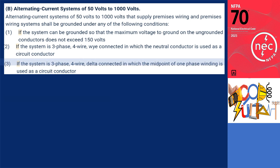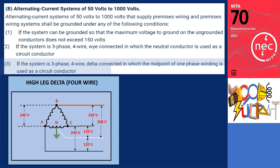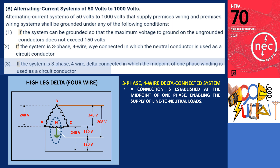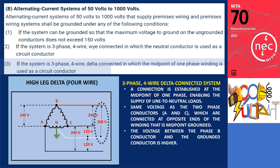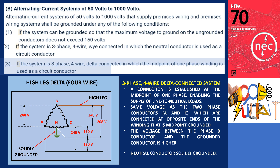For the third condition, if the system is three-phase, four-wire, delta-connected, and the midpoint of one-phase winding is used as a circuit conductor. The illustration depicts a three-phase, four-wire delta-connected system. In this system, a connection is established at the midpoint of one phase, enabling the supply of line-to-neutral loads. The grounded conductor in this configuration develops the same voltage as the two-phase conductors A and C, which are connected at opposite ends of the midpoint-grounded winding. The voltage between the phase B conductor and the grounded conductor is higher in this setup, and the code includes additional requirements addressing the arrangement and identification of the high leg. Same as with three-phase, four-wire Y-connected systems, the neutral conductor is utilized as a circuit conductor, necessitating that all operate with the neutral conductor solidly grounded.